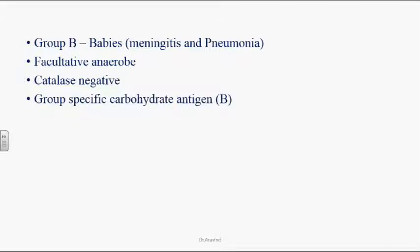It won't produce any oxygen bubbles in hydrogen peroxide solution. The Group Specific Carbohydrate Antigen B is present on these organisms — that's why it's called Group B Streptococci. It has the Group B specific carbohydrate antigen, which is the Lancefield antigen.